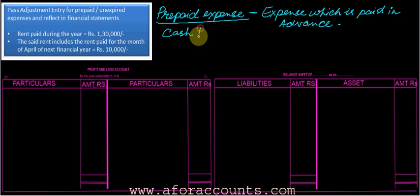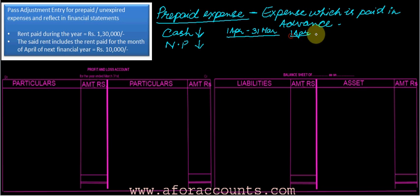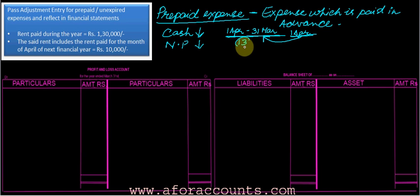If you pay something in advance, your cash will decrease by that amount and your net profit will also show a decrease. My financial year is from 1st April to 31st March. I need to pay some expenses for 12 months, but if I also pay for the next April, that pertains to the next accounting year. So instead of 12 months, I am paying for 13 months, and I need to subtract one month's expense to bring it back to 12 months.